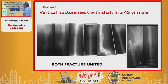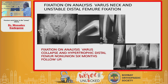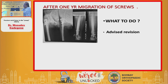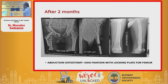But the picture is not always rosy. Here is an ipsilateral pelvis cervicobasal shaft fracture treated by a single implant where the implant failed due to inadequate fixation of the shaft — cavitation and migration of the nail were seen. Revision was done, but two months later still requiring further revision: abduction osteotomy and then plating. Results are awaited — abduction osteotomy, DHS, and locking plate for the femur.